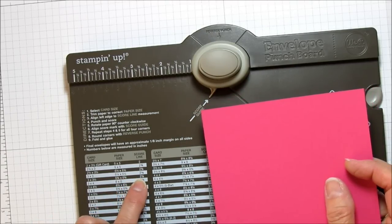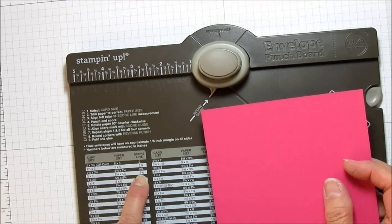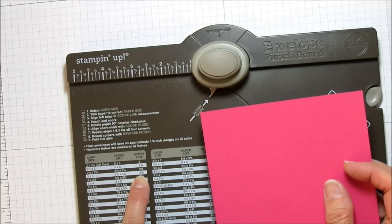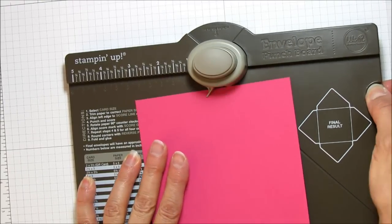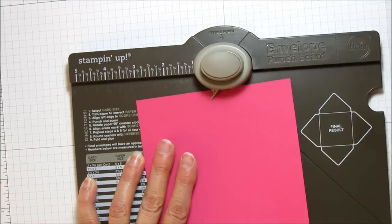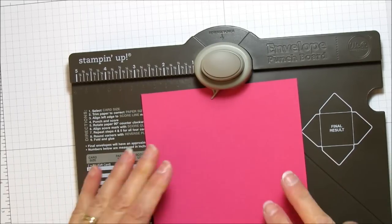Now your first punch and score is going to be at two and five eighths, and it tells you right here. So I'm going to get this little tool out here.